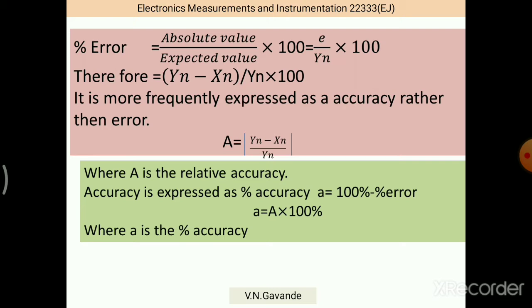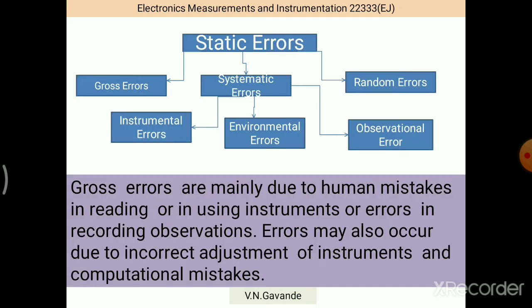In the above formula, A is the relative accuracy. Accuracy is expressed as percentage accuracy: small a equals 100% minus percentage error. That is, A equals capital A into 100%, where small a is the percentage accuracy.